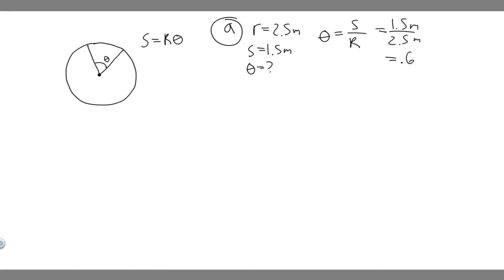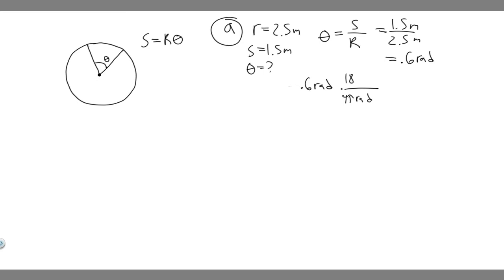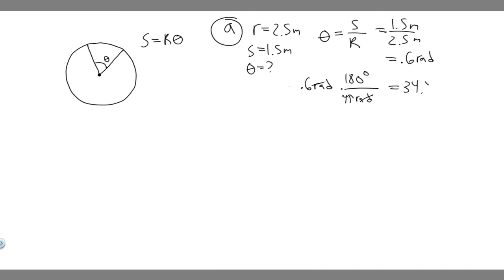1.5 over 2.5 gives us 0.6. Keep in mind the units — this is in radians, because when the meters cancel out, the result is unitless, and unitless in this context means radians. So theta equals 0.6 radians. But they also want the angle in degrees. To convert to degrees, we use the fact that pi radians equals 180 degrees. So we do 0.6 times 180 divided by pi, which gives us 34.4 degrees. That's the answer to Part A.